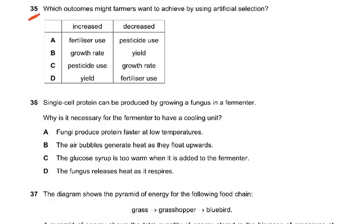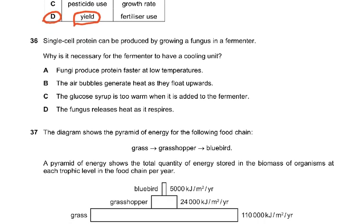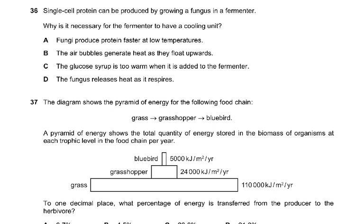Question 35. Which outcome might farmers want to achieve by using artificial selection? Naturally, they would want increased yield and less fertilizer use — a plant that grows very rapidly and needs less fertilizer. The answer is D. Question 36: single cell protein can be produced by growing a fungus in a fermenter. Why is it necessary for the fermenter to have a cooling unit? Because there are so many microorganisms — the fungus releases heat as it respires, just like too many people in a room makes it hot. The cooling jacket prevents overheating.